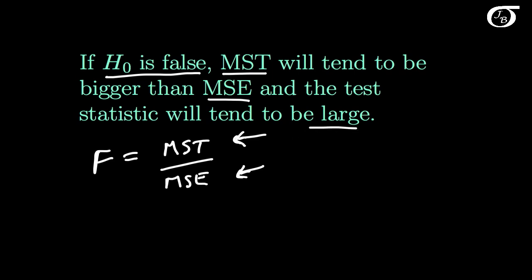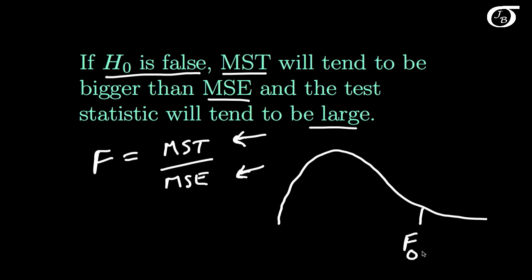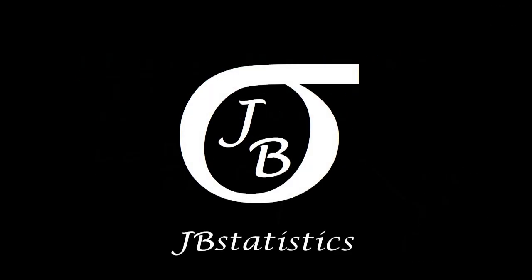So in one-way ANOVA, for given degrees of freedom, the greater the value of the F statistic, the greater the evidence against the null hypothesis. If I were to draw out my F distribution, and let's say we got an F statistic at some observed value f_obs, the p-value is the probability of getting our observed value of our F statistic or something even farther out in the tails. That is going to be our p-value in one-way ANOVA. I show how to find that p-value in another video, and in a different video I work through an example of one-way ANOVA.